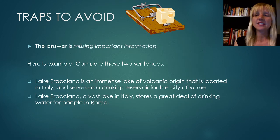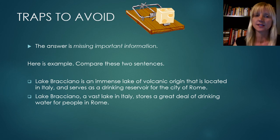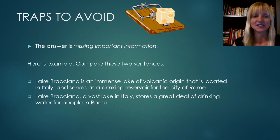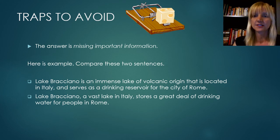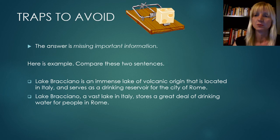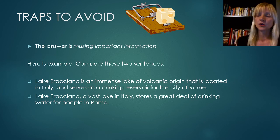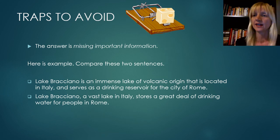Next, if the answer is missing important information, it is not correct. For example: 'Lake Bracciano is an immense lake of volcanic origin located in Italy and serves as a drinking reservoir for the city of Rome.' An incorrect paraphrase says: 'Lake Bracciano, a vast lake in Italy, stores a great deal of drinking water for people in Rome.' The second sentence looks good, but it's missing 'volcanic origin,' which is an important idea in the original sentence, so it is not correct.